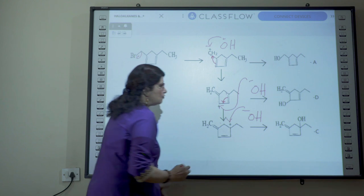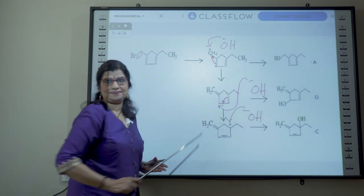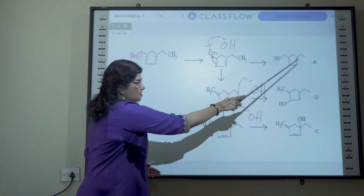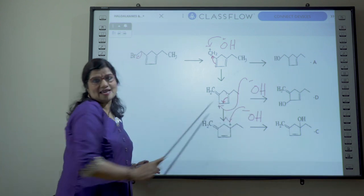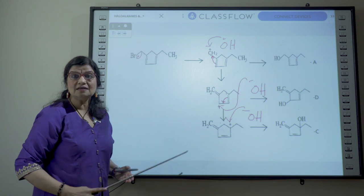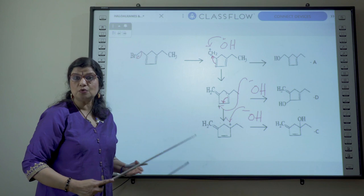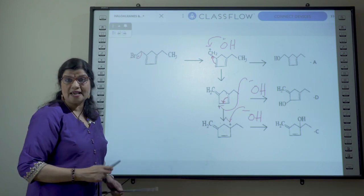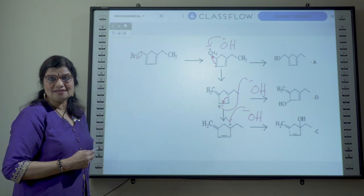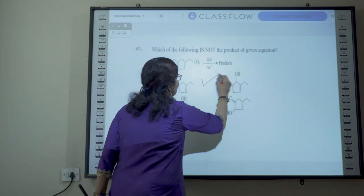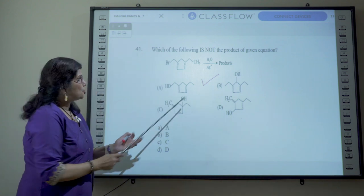So it's a tertiary allylic carbocation because on this positive carbon there are no hydrogens, all these are carbon atoms. So you have a more stable tertiary allylic carbocation and the attachment of the OH minus to this positive carbon will produce option C. All right, so the relevant products of this reaction are options A, D, and C. So what is the correct answer? B is the correct answer. The option B, the compound corresponding to option B is not produced during this reaction.